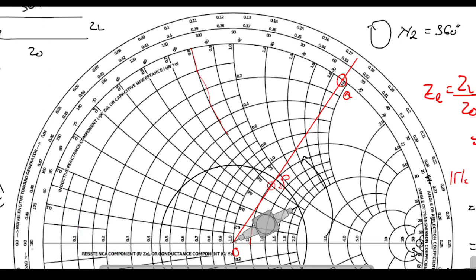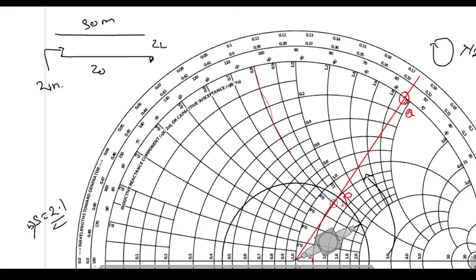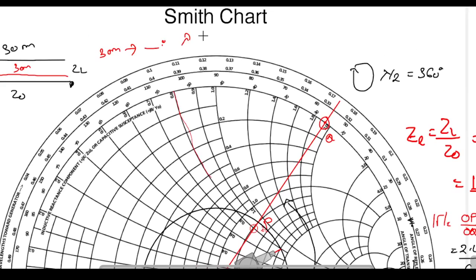We are standing at the ZL point on the Smith Chart. If I move a distance of 30 meters, I will get the Zin value. But I cannot move 30 meters directly — I must convert it to degrees. Lambda equals velocity divided by frequency: 0.6 times 3×10⁸ divided by 2×10⁶ equals 90 meters. So 90 meters corresponds to 720 degrees.